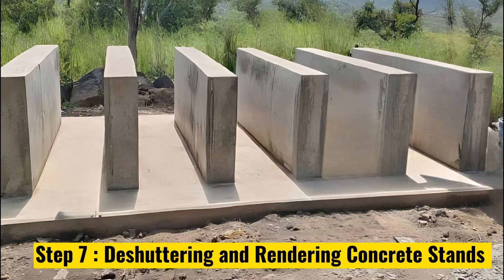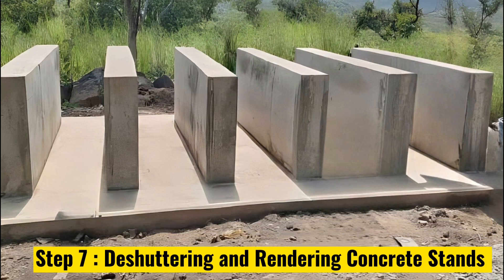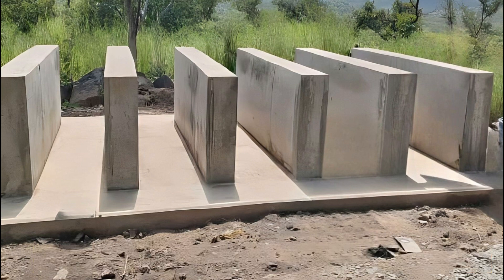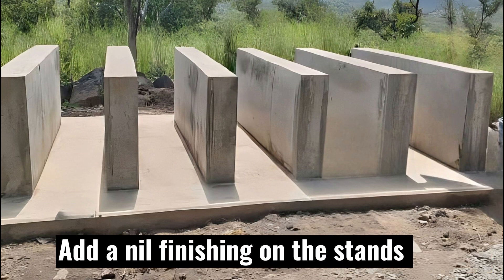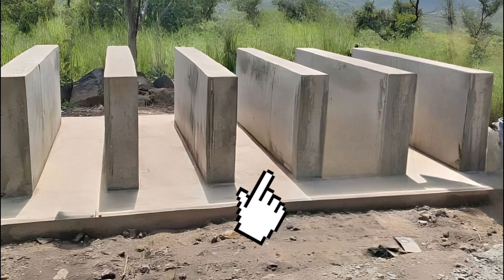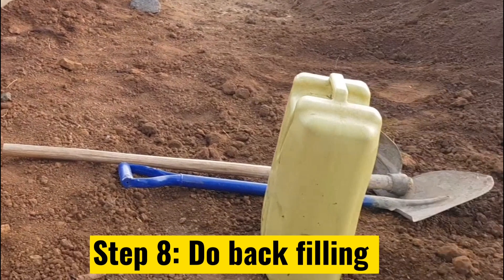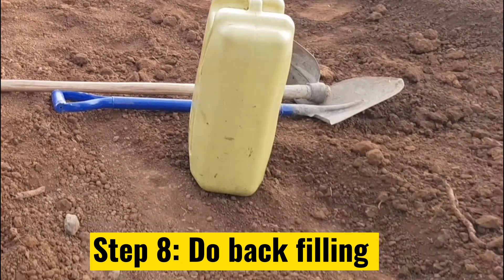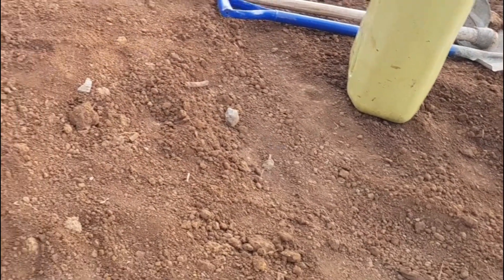Step 7 involves deshuttering the formwork and rendering the surfaces of the stands and also the exposed surfaces of the base. You may also add a neat finishing or what we call a cement paste on top of the rendered surface to give a smooth surface finish. Step 8 is to do backfilling and ensuring that the whole area around the site is clean.